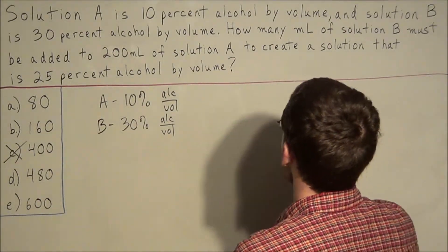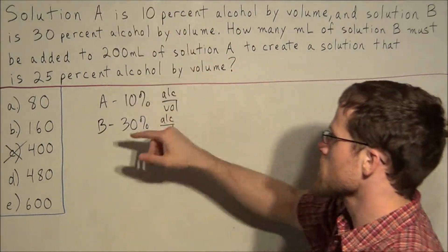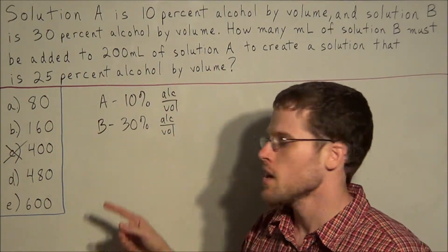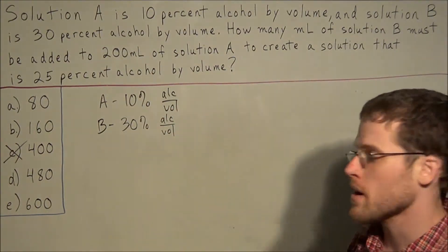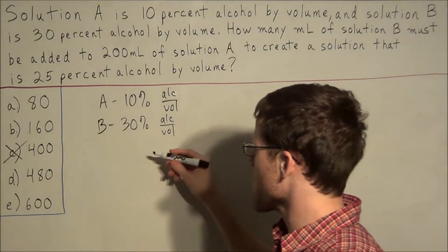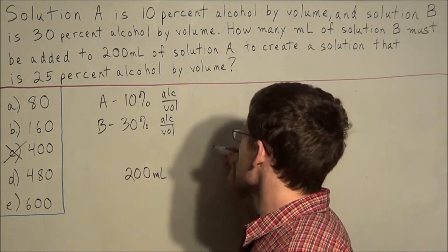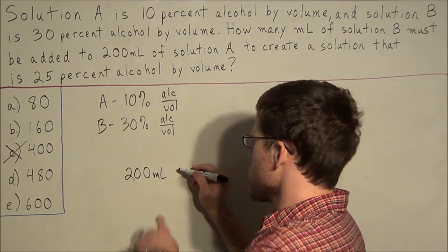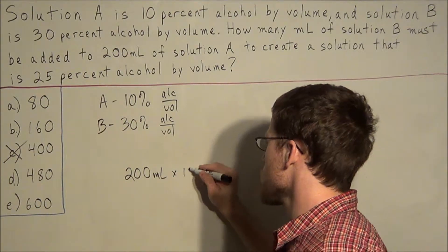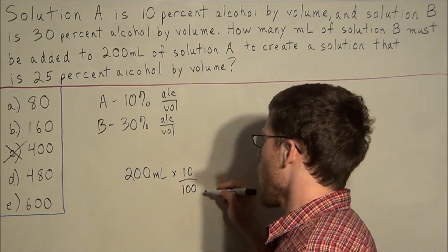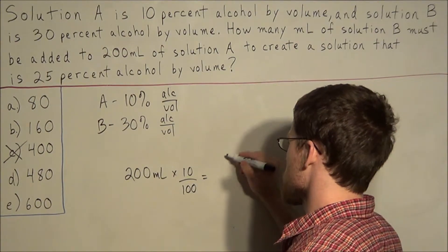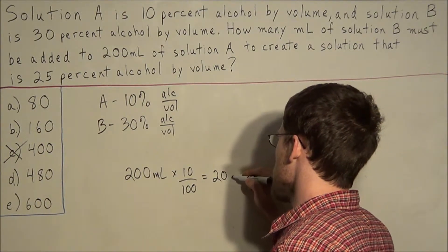So now what we could do is we could look at an alternate method for finding out the correct answer of choice E. So once again, we're still going to consider the fact that A is 10% and B is 30% alcohol by volume. And we know that we have 200 milliliters of solution A. So we're going to consider the fact that we have 200 milliliters of A, and we're still going to find 10% of 200 milliliters, which will once again give us 20 milliliters.